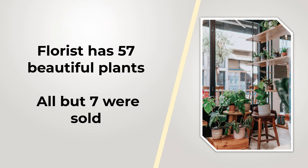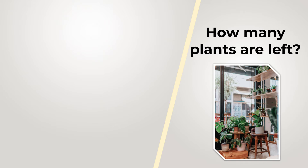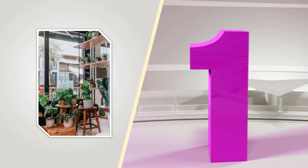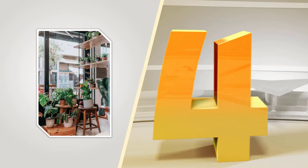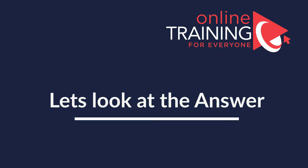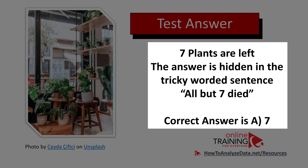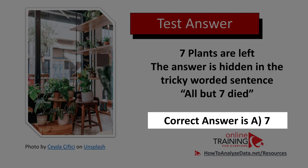Here's a challenging question you might frequently see on the test. A florist has 57 beautiful plants. All but 7 were sold. How many plants are left? The choices are: A) 7, B) 57, C) 64, D) 50. The answer is 7 plants are left. The answer is hidden in the tricky wording: 'all but 7' means all were sold except 7 — so the correct answer is A, 7. Hopefully you've nailed this question.